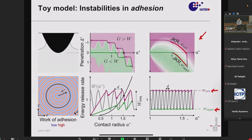The gray curve here is simply what we input into the system — this is our work of adhesion. It is per surface area; the W values are energy per surface area.